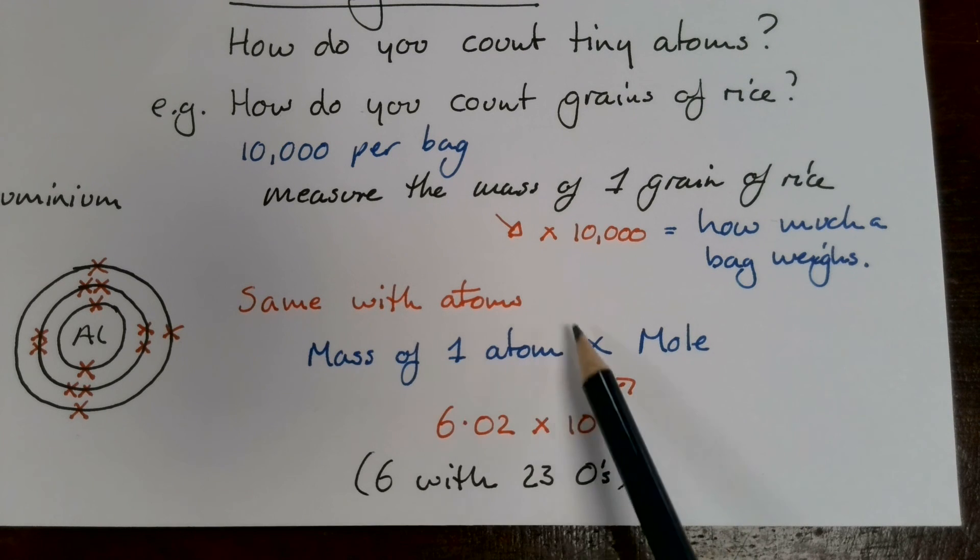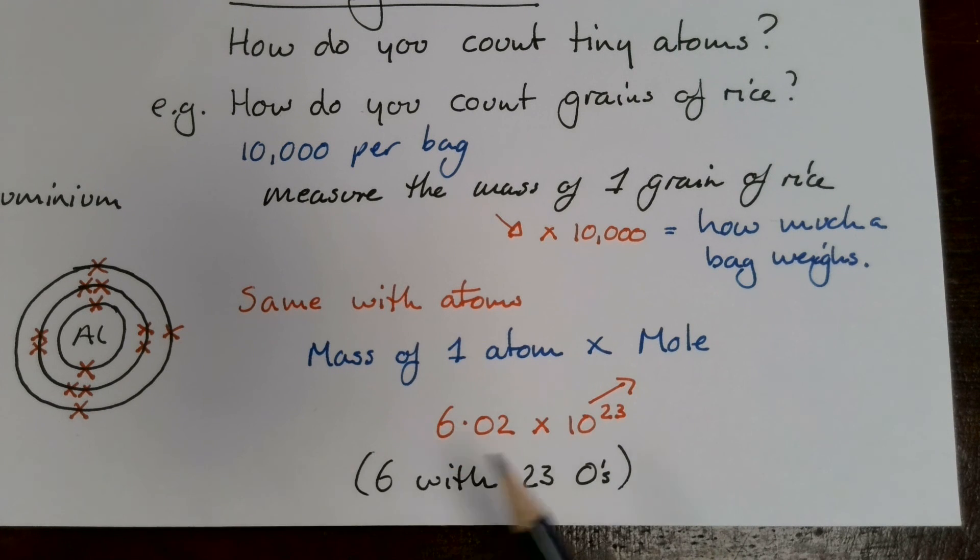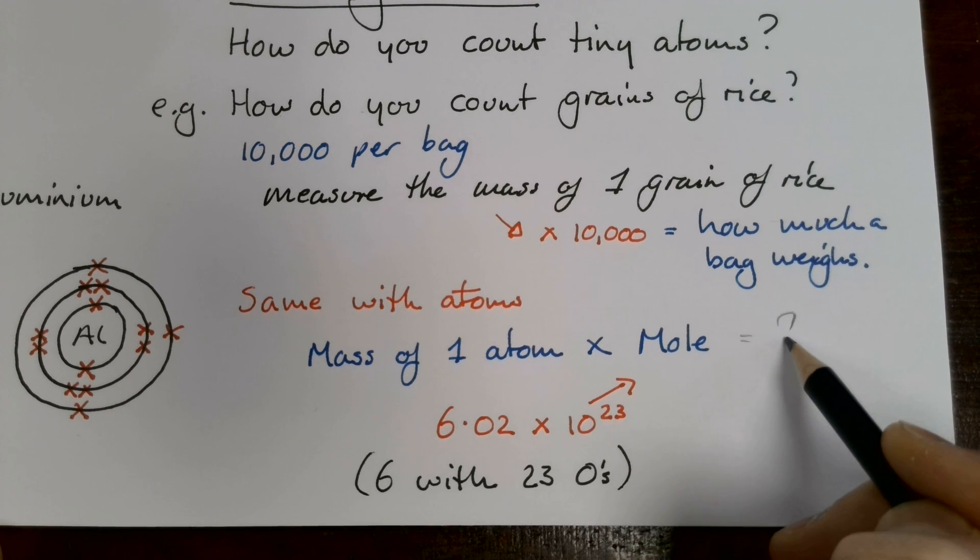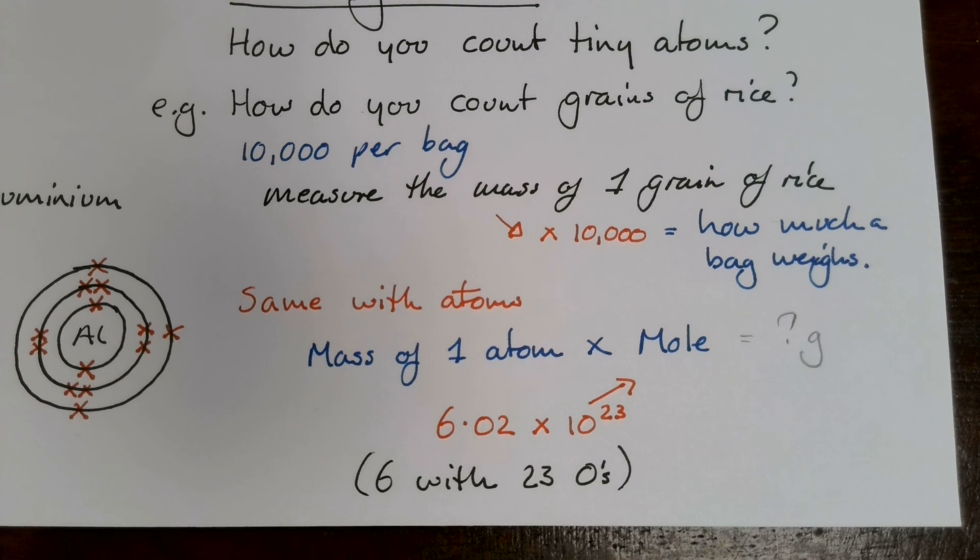And all we do, we just need to know the mass of one atom and we multiply it by this number. And that tells us how many grams you need to weigh out of a particular atom. And that's how we do it.